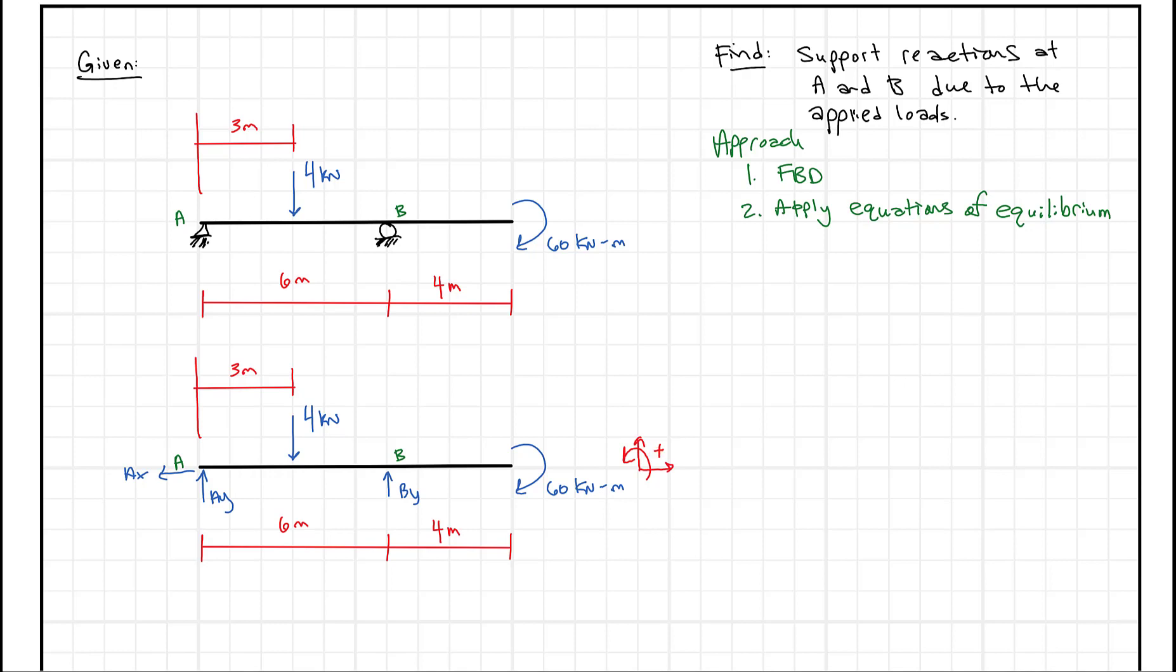So let's just start writing our equations of equilibrium. And I'm going to start with the sum of the forces in the X direction has to equal zero. So this is hopefully the easiest one because all we get is minus AX equals zero. So hopefully this one's pretty obvious. There are no horizontal forces, AX equals zero. That one's pretty simple, straightforward.